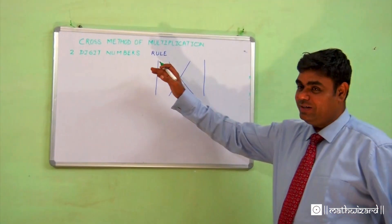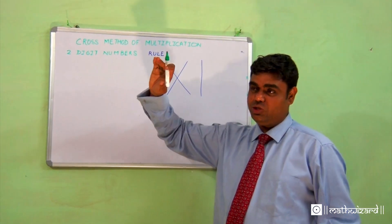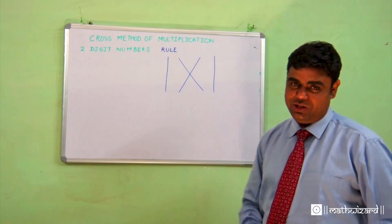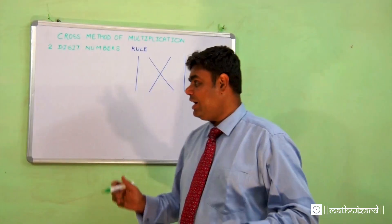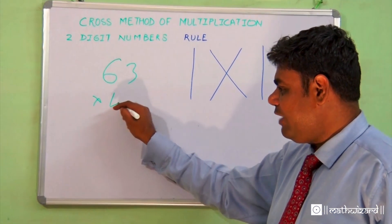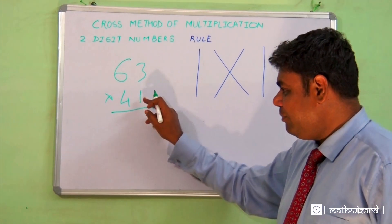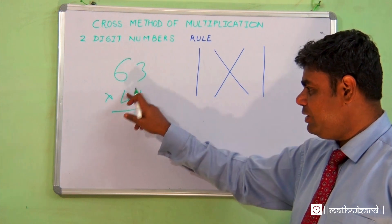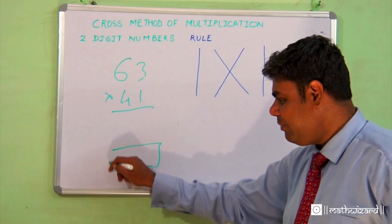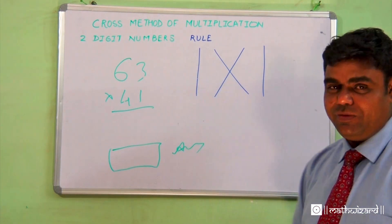To learn a new method based on Vedic maths, this is called the cross method of multiplication. We all know the conventional method: a two-digit number multiplication comes in three lines. First I multiply this number, then with this number, and finally add it up to get the answer in the third line.